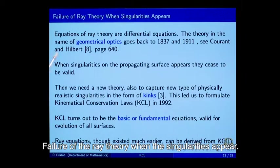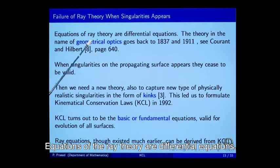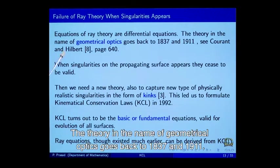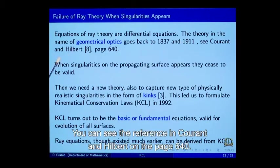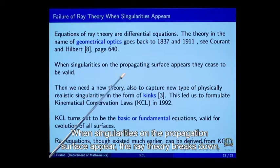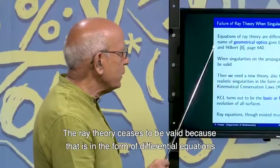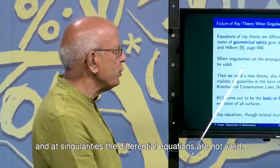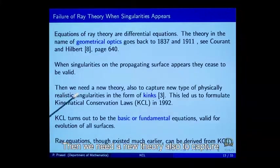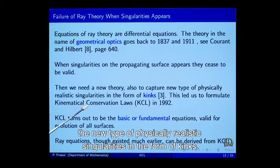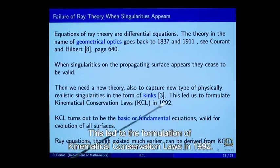Failure of the ray theory when singularities appear. Equations of the ray theory are differential equations. The theory in the name of geometrical optics goes back to 1837 and 1911 — see the reference in Courant and Hilbert, page 640. When singularities appear on the propagating surface, the ray theory breaks down, because differential equations are not valid at singularities. Then we need a new theory to capture the new type of physically realistic singularities in the form of kinks. This led to the formulation of kinematical conservation laws in 1993.